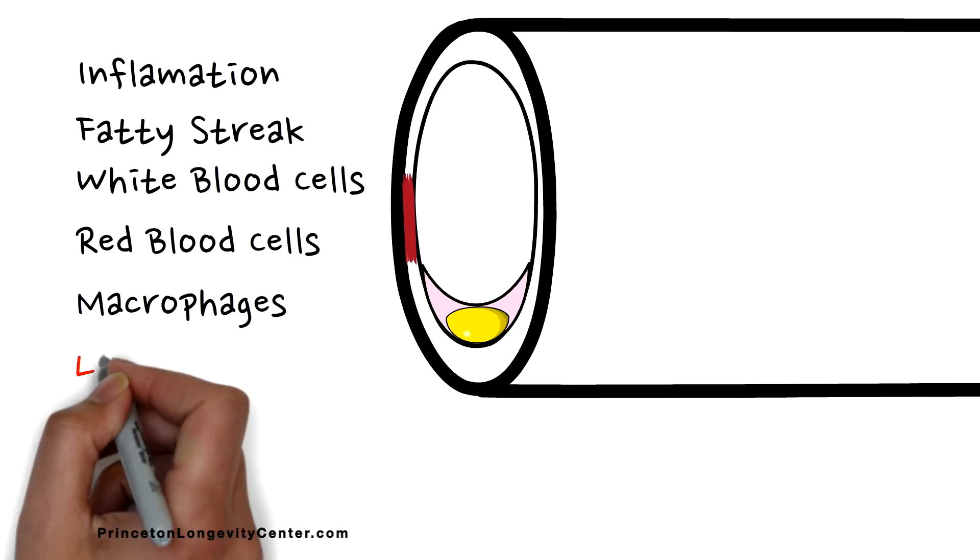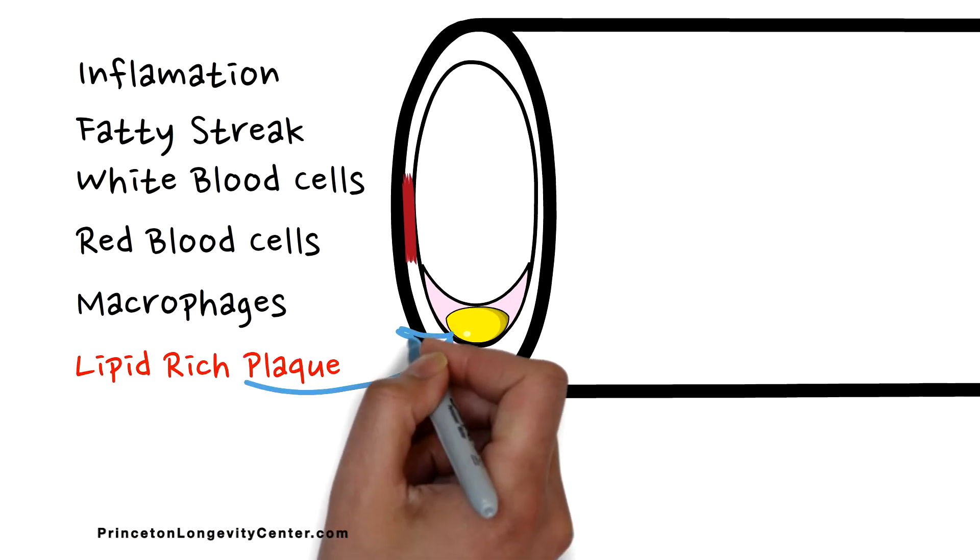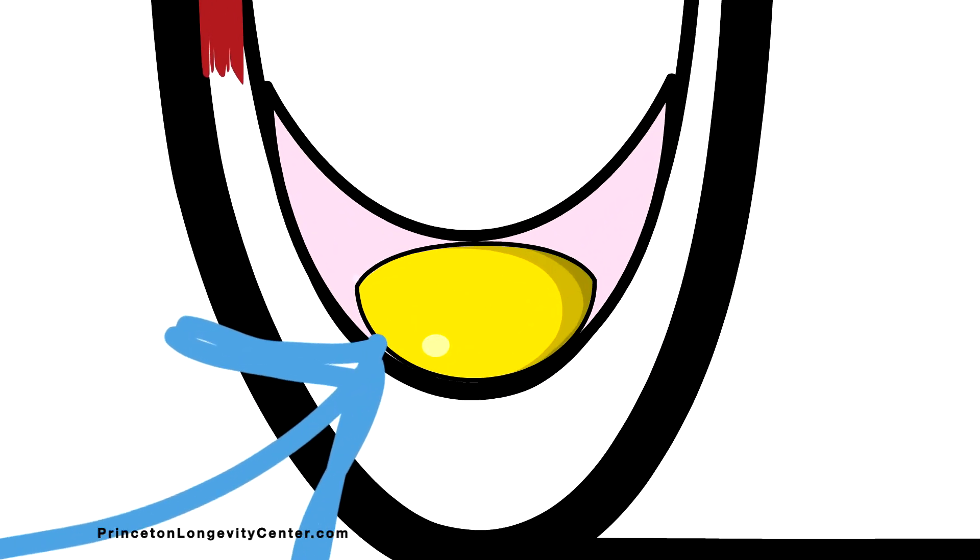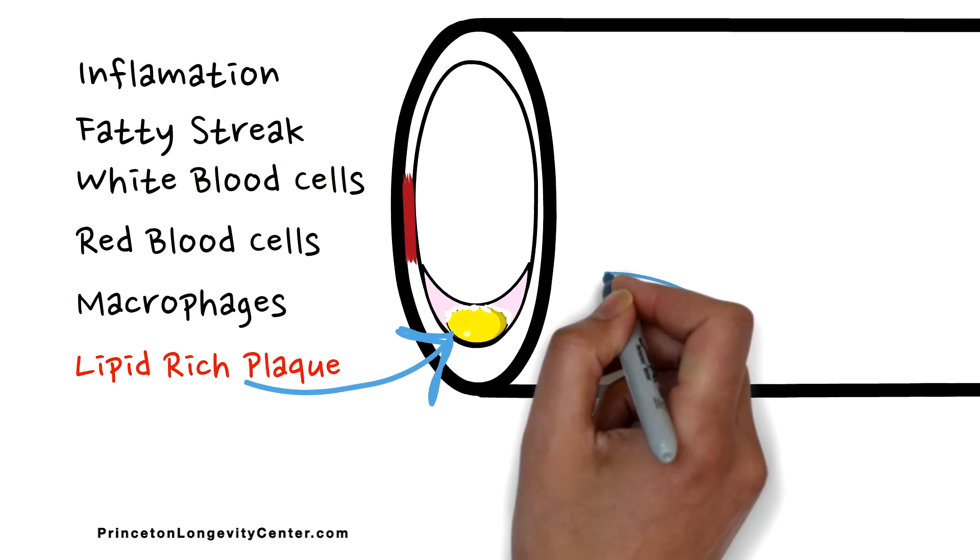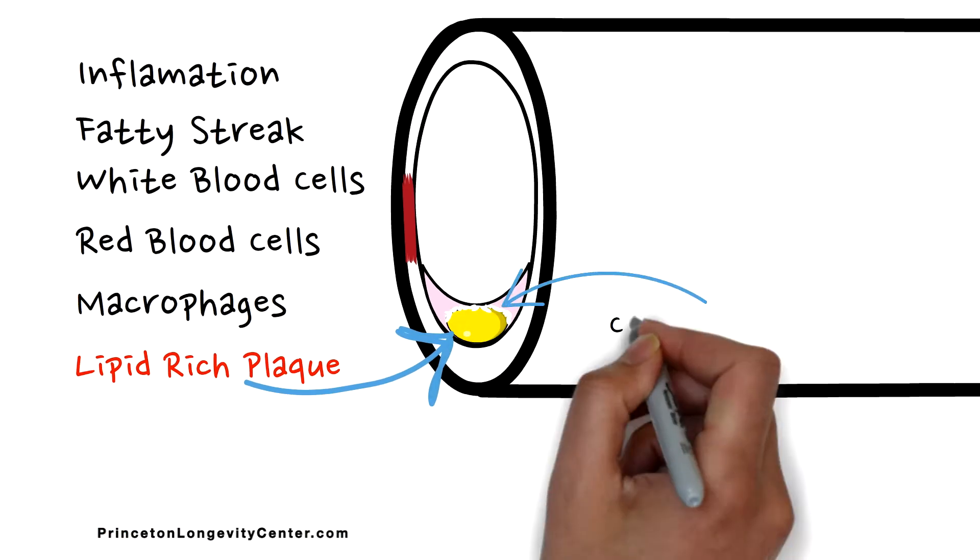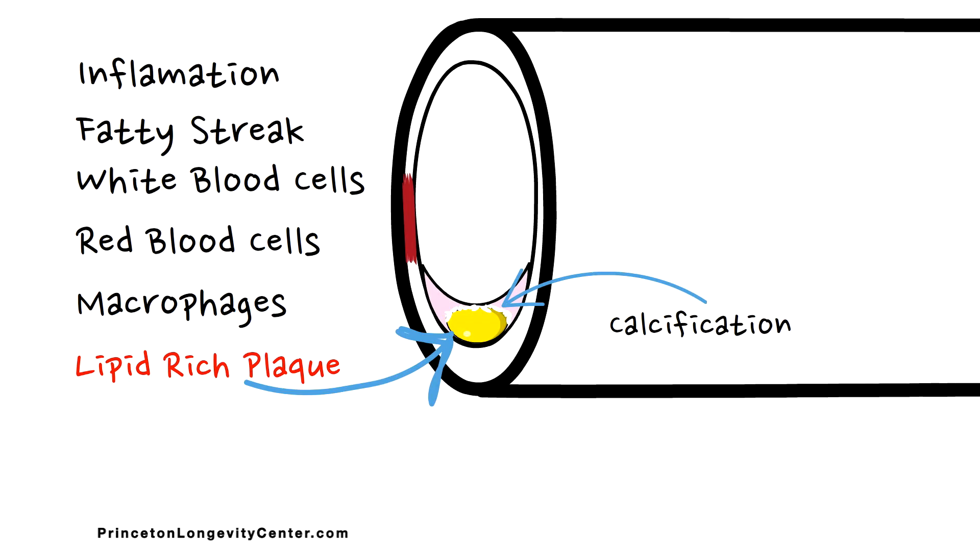Over time, we also know that these lipid-rich plaques often undergo a process of calcification. As calcium deposits on these lipid-rich plaques, they actually become stabilized and less likely to rupture or break apart.